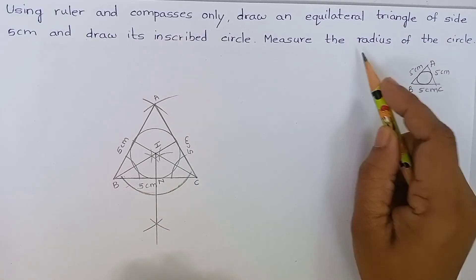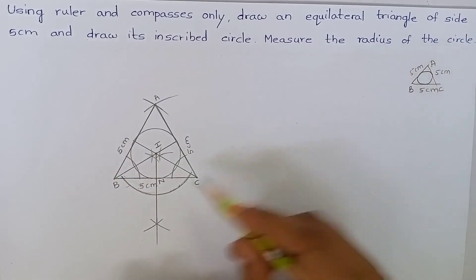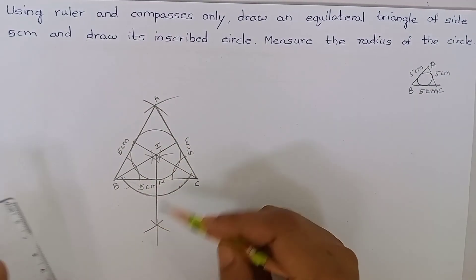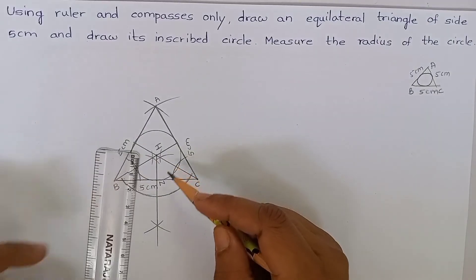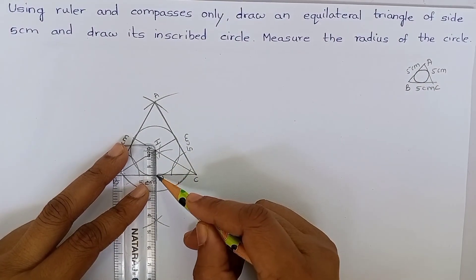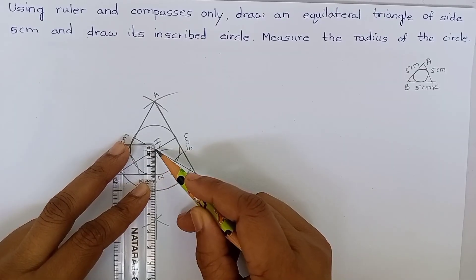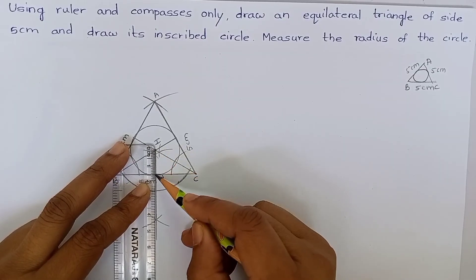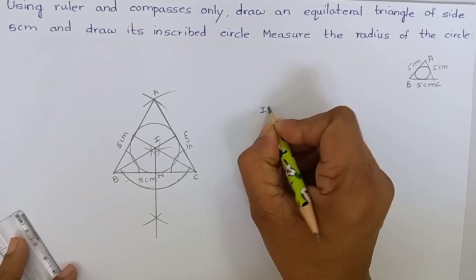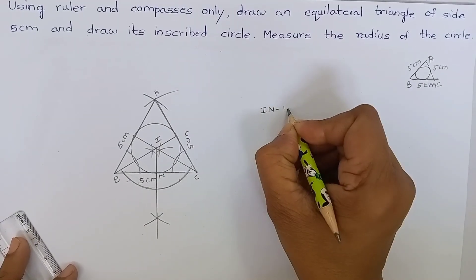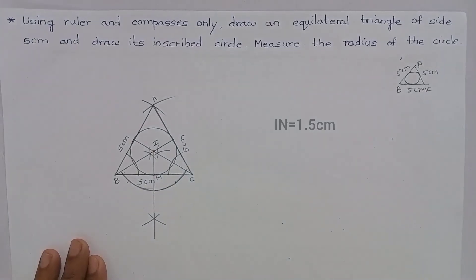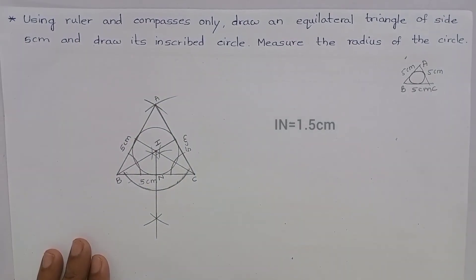Measure the radius of the circle. IN is the radius. You can see here it is 1.5 centimetres. IN is 1.5 centimetres. Hope you have understood. Thank you.